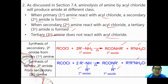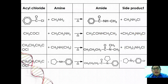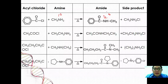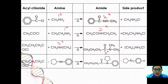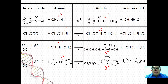Here are examples of the equations for reactions using acyl chloride and different classes of amine. If you react acyl chloride with a primary amine, you form a secondary amide. If you react with a secondary amine, you form a tertiary amide. These are the second reactions of the amine — the reaction with acyl chloride.